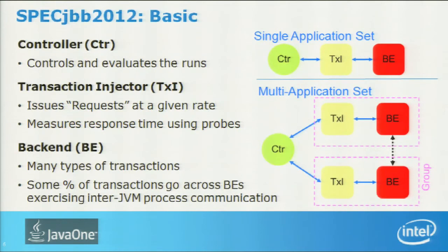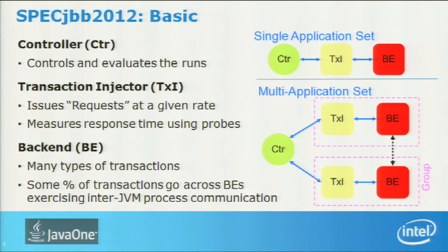The benchmark has three components: controller, transaction injector, and backends. The controller manages the complete run phase and generates the report. Transaction injectors are load injectors that send requests to be processed. The backend is the business logic that processes those requests and sends responses back. You can run it in a single configuration or as multi-application set deployed in clusters or cloud mode. A new feature is backend-to-backend inter-Java process communication, which JVMs weren't previously optimizing.